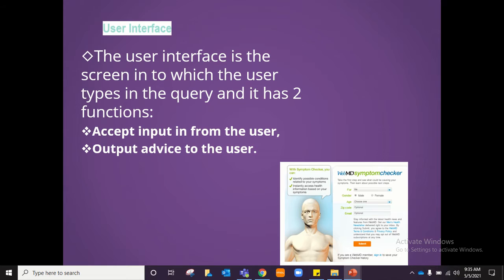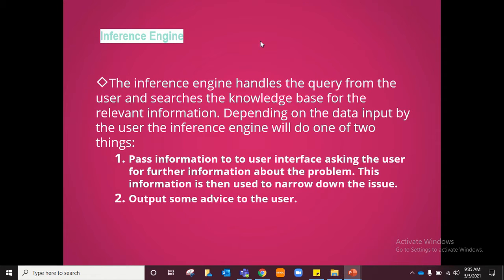The user interface is the screen where the user types their query. For example, in an expert system to check your symptoms, you enter details like your gender and age. It accepts input from the user and gives advice back. The inference engine handles the query, searching the knowledge base to get the correct information. Depending on the data the user inputs, the inference engine will either pass information back to the user interface asking for more details, or directly give advice to the user if the information provided was good enough.